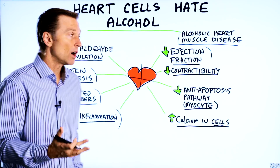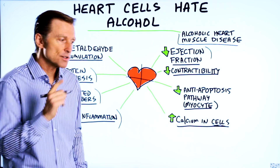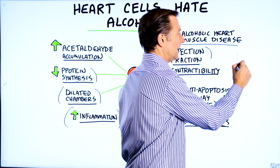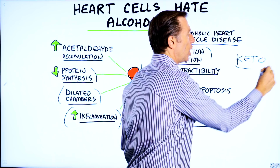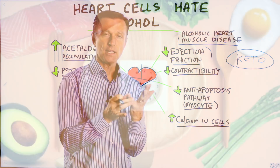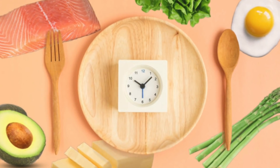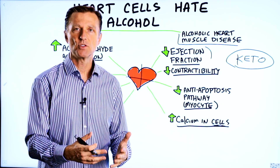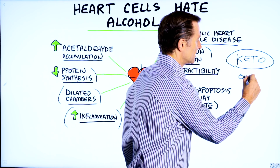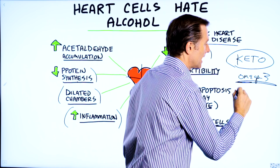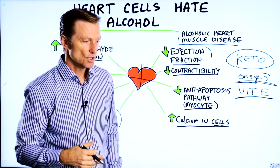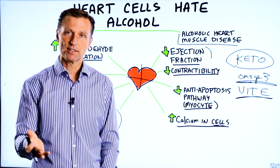If you're going to drink some wine occasionally and you want it to create more recovery, there are certain things that the heart loves. The biggest thing is ketones — fat. The heart prefers fat fuel way over glucose fuel. Healthy keto and intermittent fasting are a great way to recover the damage that alcohol could create. The other two things the heart loves are omega-3 fatty acids and vitamin E — and make sure the vitamin E includes tocotrienols, not just a synthetic tocopherol.